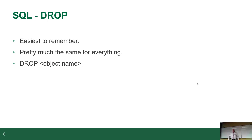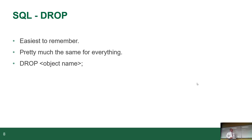DROP is the easiest to remember — it's pretty much the same for absolutely everything. DROP, what it's called, goodbye. There is one dangerous command you can add: CASCADE. If you have a customers table with an orders table and an order lines table, and you go DROP customers CASCADE, it deletes everything related to it — wipes out the entire family tree in one go. Very dangerous; don't use it unless you know what you're doing.